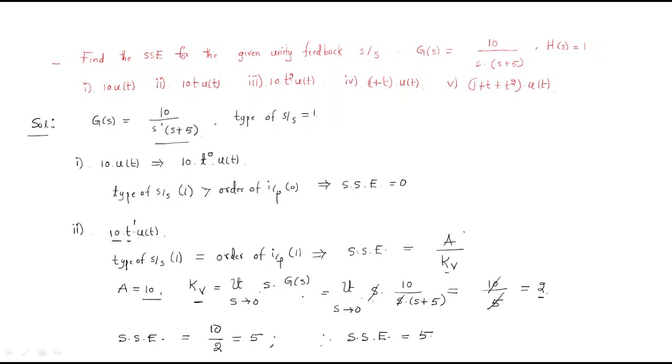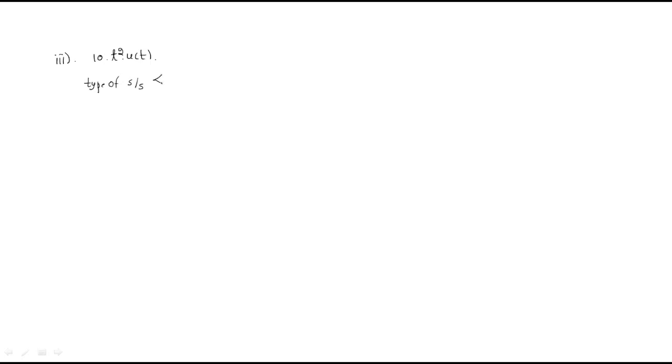The third input is 10·t²·u(t). Here the type of system (1) is less than the order of input (2). Therefore, the steady-state error is infinite.